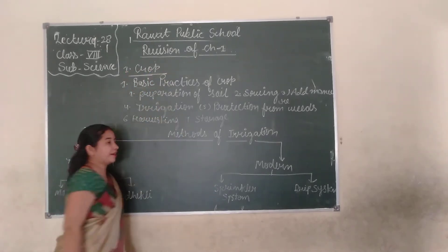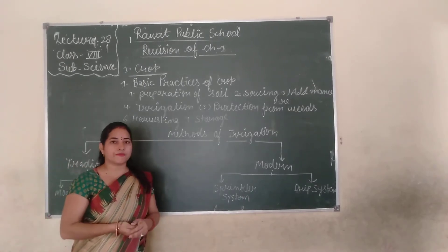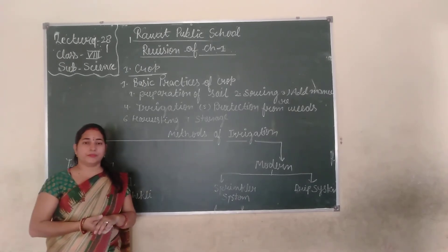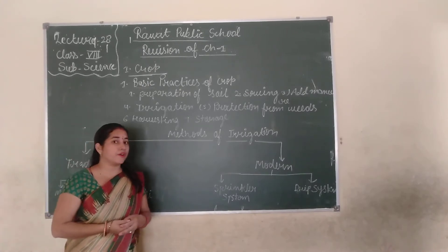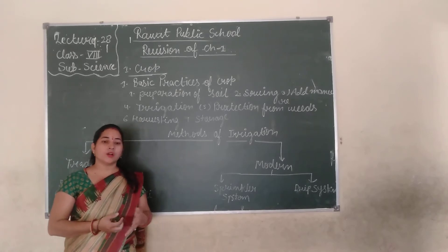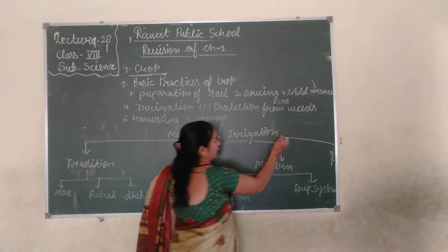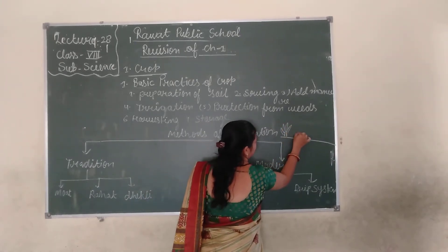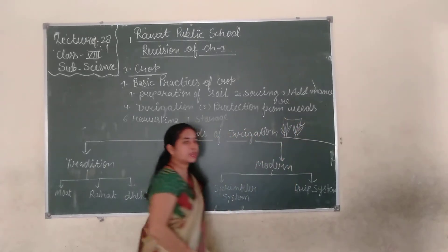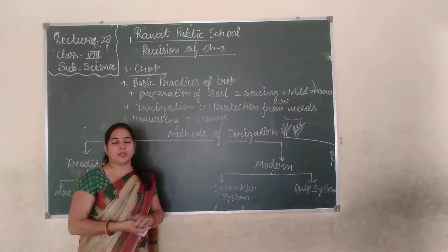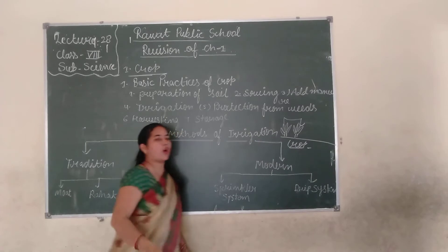First of all, what is the meaning of crops? When the same types of plant is grown in a large area, it is called crops. Suppose it is a large area — if we grow crops, they are all the same types and same species. So it is called crops.